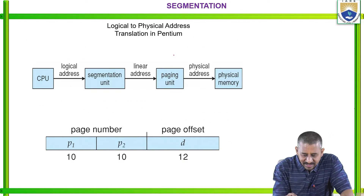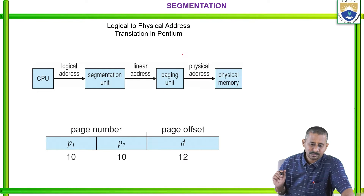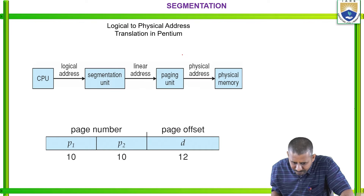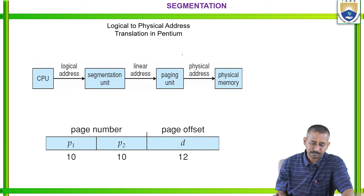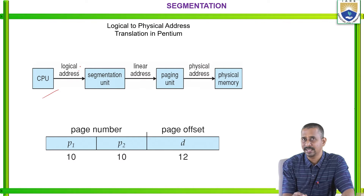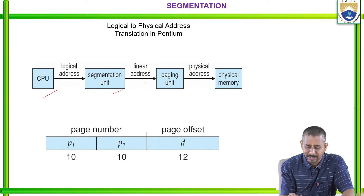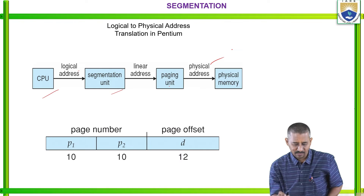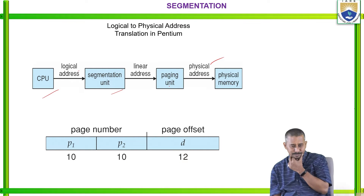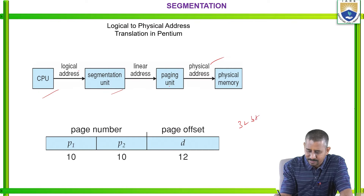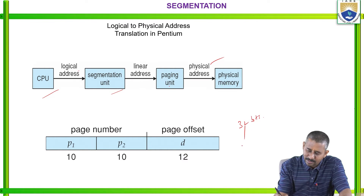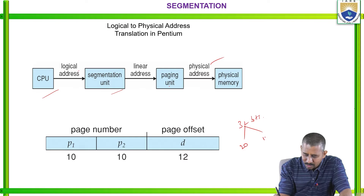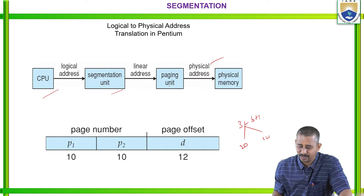Logical to physical address translation in the Pentium works as follows: the processor generates a logical address, the segmentation unit produces a linear address to the paging unit, and the paging unit maps it to the physical memory. In the Intel Pentium architecture, the page number occupies 20 bits and the page offset occupies 12 bits.